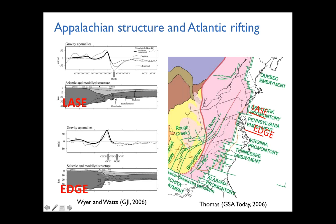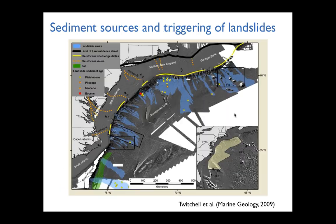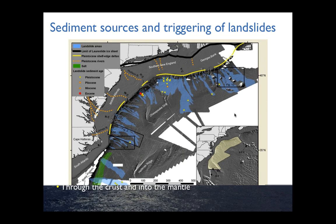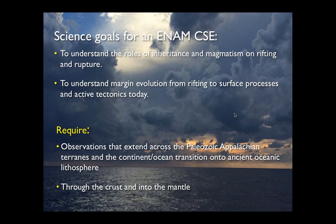We call this a passive margin, but there is increasing awareness that ENUM hosts a range of active processes. Landslides triggered by earthquakes, depositional processes like hydrate dissociation — this margin is still very active. This activity, both landslides and earthquakes, can have a substantial impact on this densely populated coastal region.